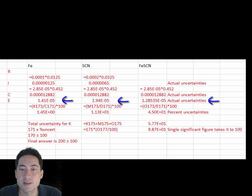These final actual uncertainties are then converted back to percent uncertainties for the final equilibrium constant equation, which is multiply and divide. The final percent uncertainty is used to calculate the actual final uncertainty. This is rounded to one significant figure. The final result is then adjusted to match the unit placings of the uncertainty, given the value of 200 plus or minus 100.